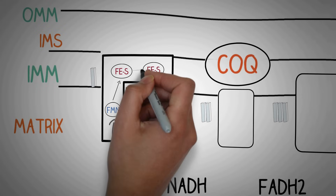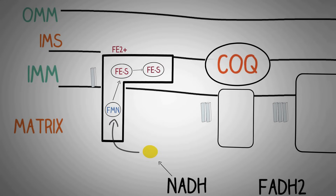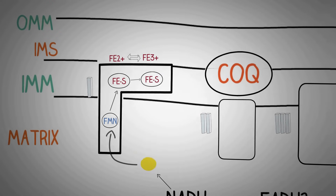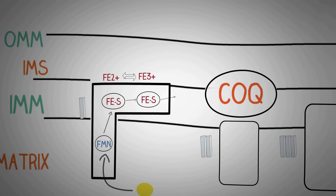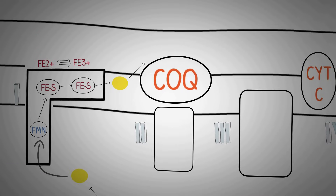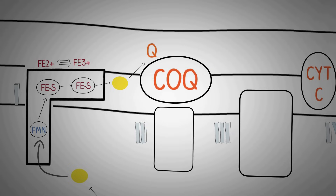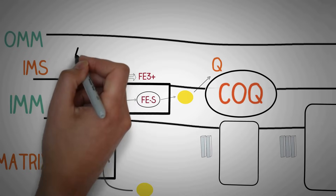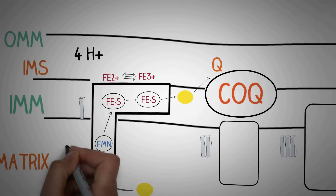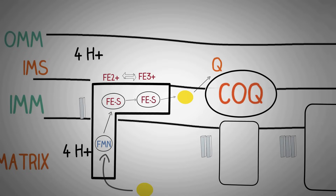These are redox reactions in which the iron ions go from the ferrous state to the ferric state depending upon when they receive and when they donate the electrons. In the next step, the iron-sulfur proteins donate the electrons to coenzyme Q, which is ubiquinol — a freely permeable molecule inside the inner mitochondrial membrane. These redox reactions generate energy which is used to pump four hydrogen ions from the matrix of the mitochondria into the inter membrane space.